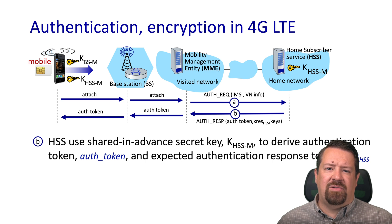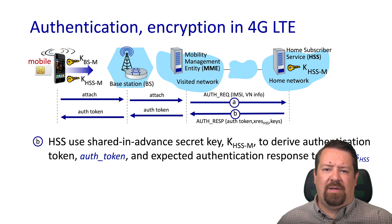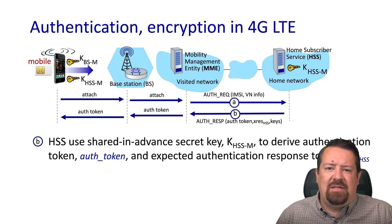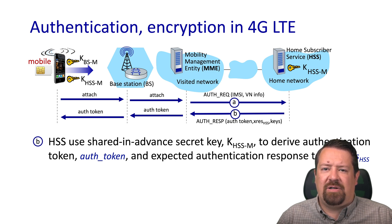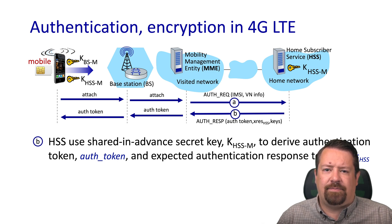The HSS also knows what keys are on the mobile SIM card, and so it uses that pre-shared key to derive the authentication token and the expected authentication response. It then sends back the authentication token, response token, and session keys to the mobility management entity. Note that the home subscriber service does not send the initial shared secret to the MME — the visited network is not trusted to the same level as the home network. The visited network only receives tokens generated based on those shared secrets.